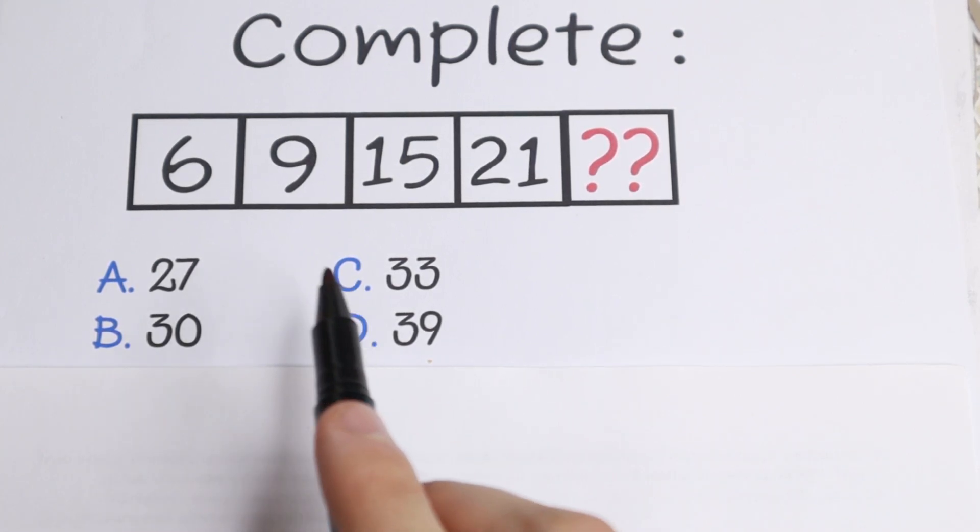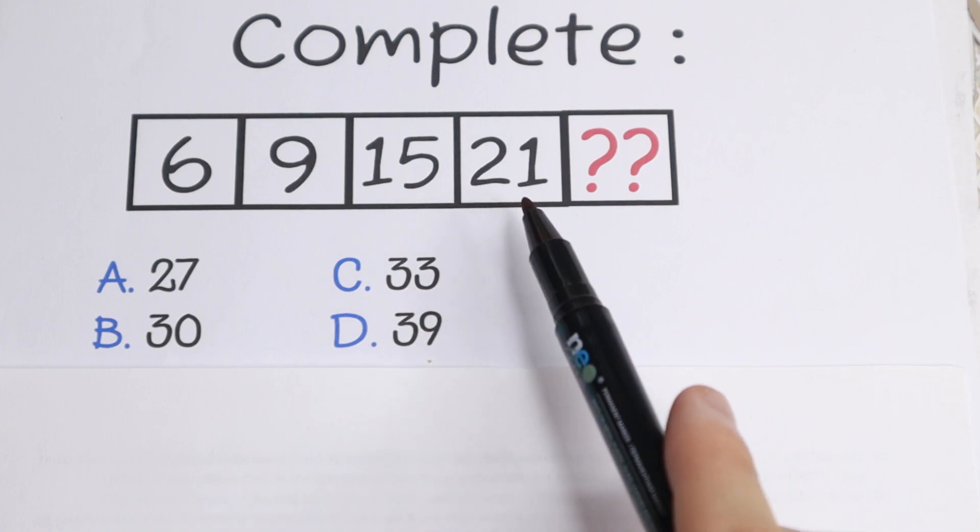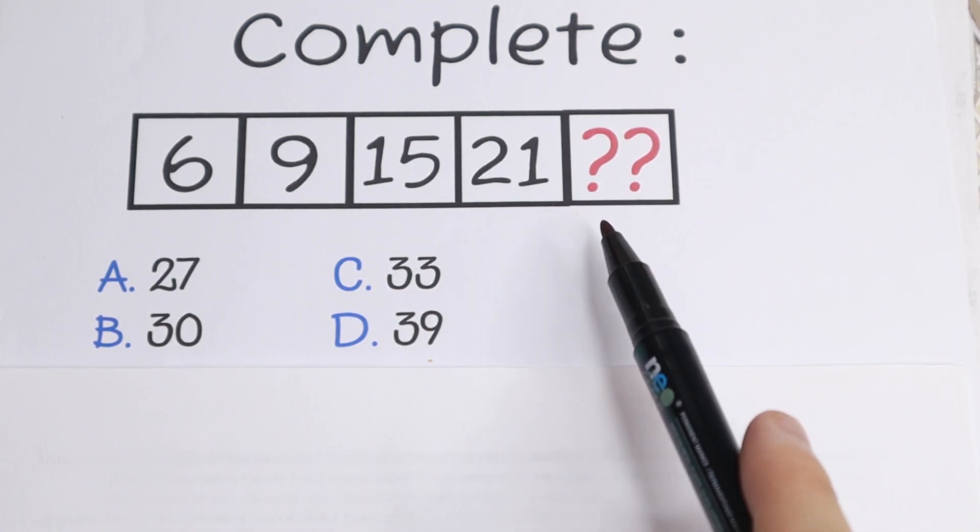We have a lot of numbers: 6, 9, 15, 21, and we need to find the last number in this numeric series.